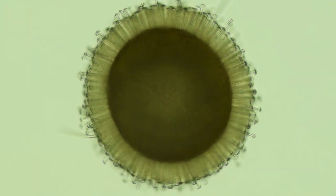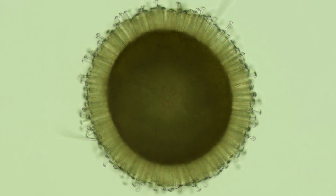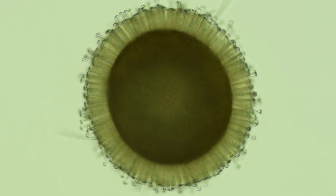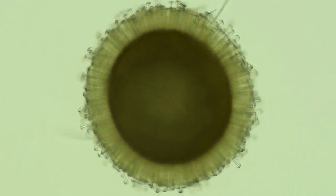Spicules are also found in the gemmules of freshwater sponges. Gemmules are overwintering structures. They're basically a sphere of spongin filled with undifferentiated cells inside and a layer of special hooked spicules on the outside.